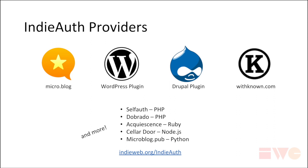This is actually implemented in a whole bunch of places right now. If you have an account on micro.blog, every micro.blog account is also an IndieAuth URL. The Known CMS — similar to WordPress but specifically for the micro-blogging use case — also has native support for it. If you're running WordPress or Drupal, you can install a plugin that enables this. And there's a handful of open source projects that are standalone versions of this OAuth provider that provides IndieAuth identities.